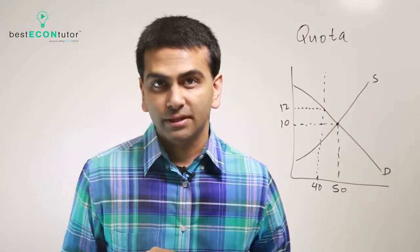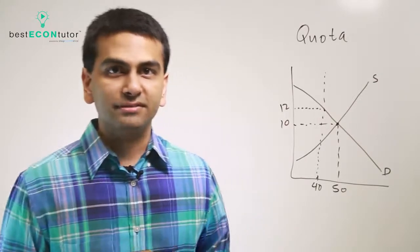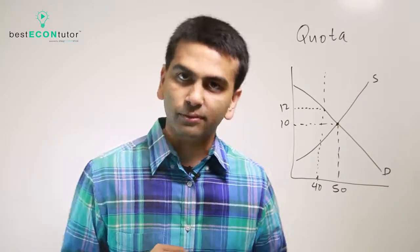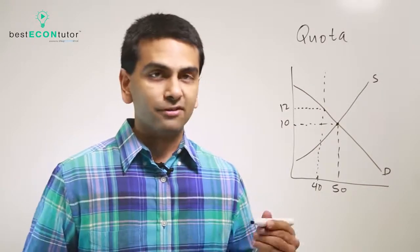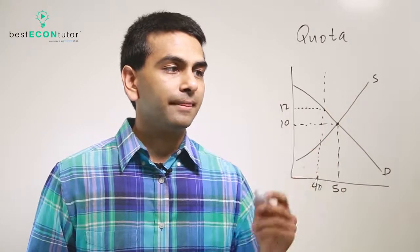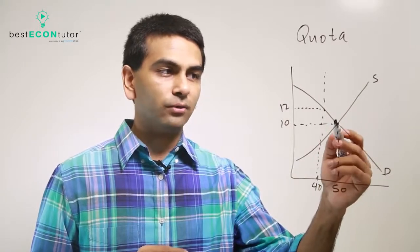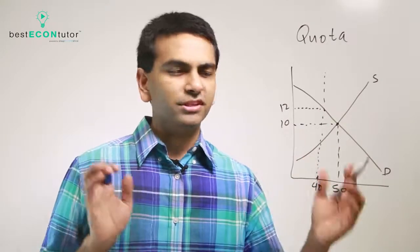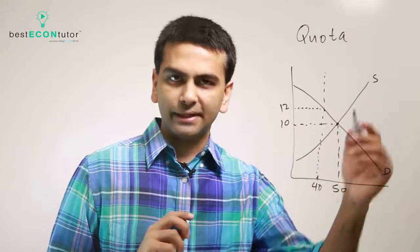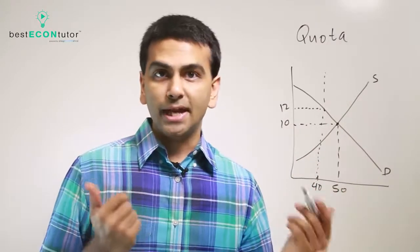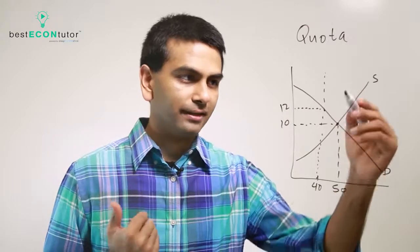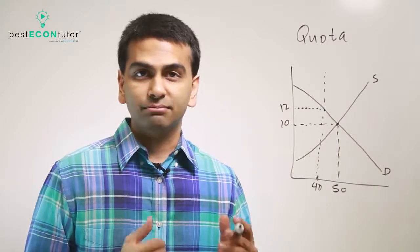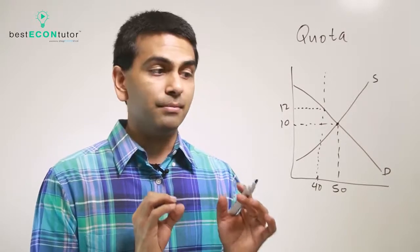Now let's take a look at quotas. A quota is a quantity control rather than a price control like ceilings and floors. So here, if the government were to say that in this market where 50 items are being sold you can't sell any more than 60, that would be a non-binding quota because they're already selling less than 60 — no big deal.